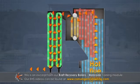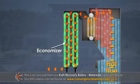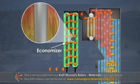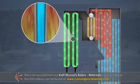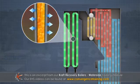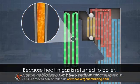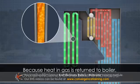This gas flows through an economizer which contains heat transfer tubes similar to the boiler tubes. As incoming water flows through these tubes, the water is heated and the gas surrounding the tubes is cooled. Because some of the heat in the gas is returned to the boiler, the overall efficiency of the boiler is increased.